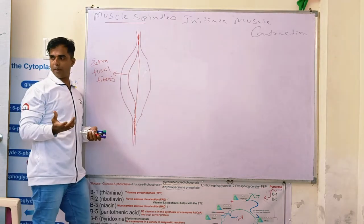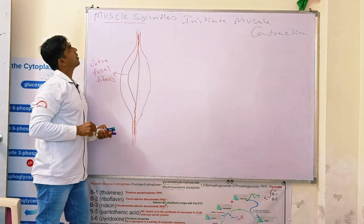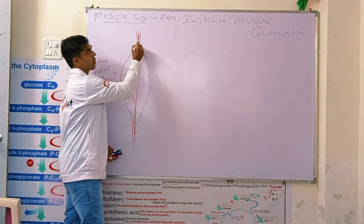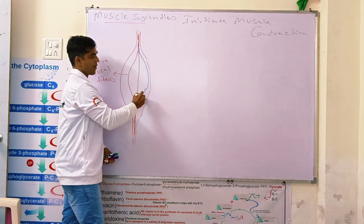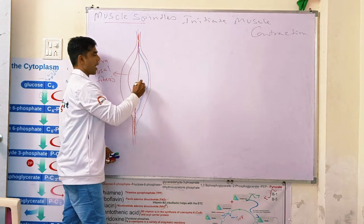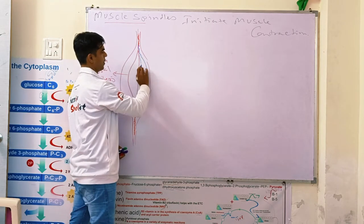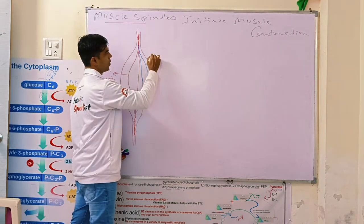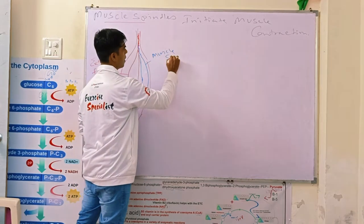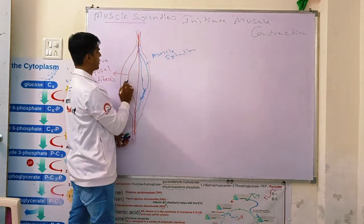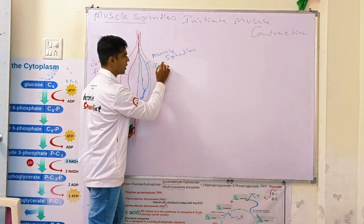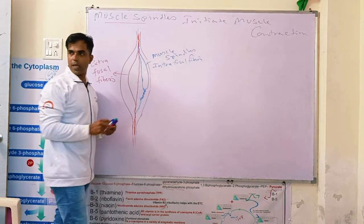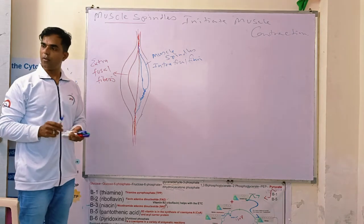And these extrafusal fibers have muscle spindles linked to them. These are muscle spindles, also known as intrafusal fibers. They are connected to the extrafusal fibers.